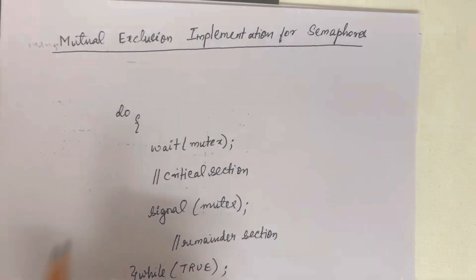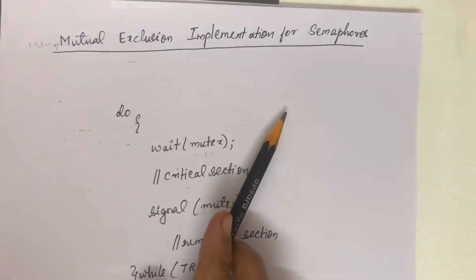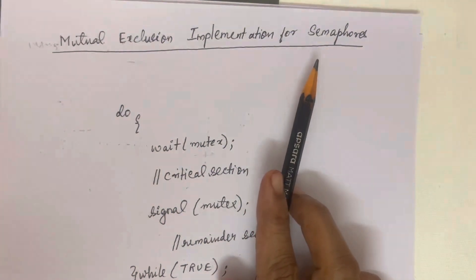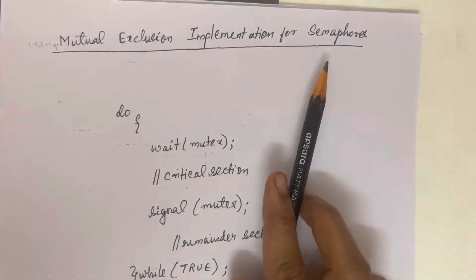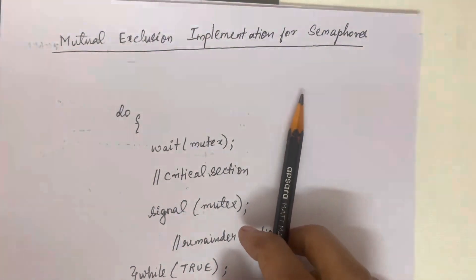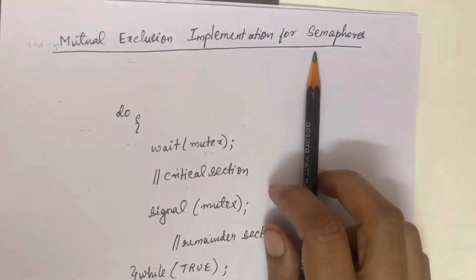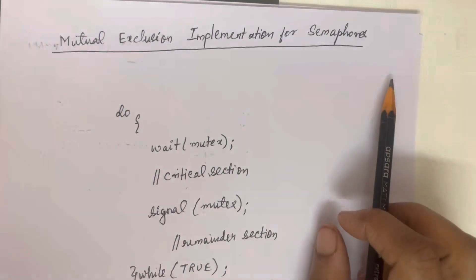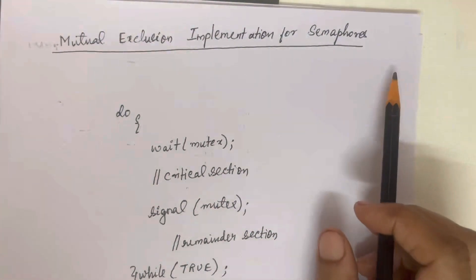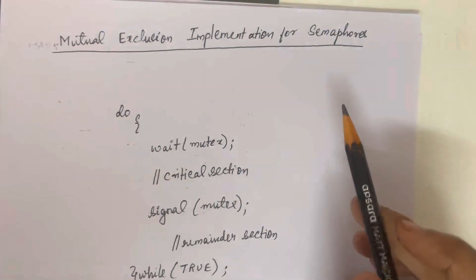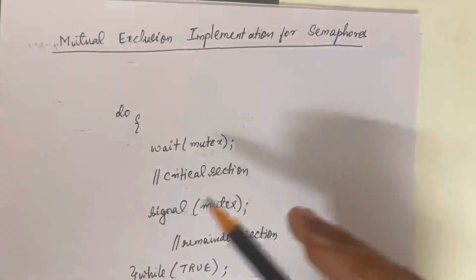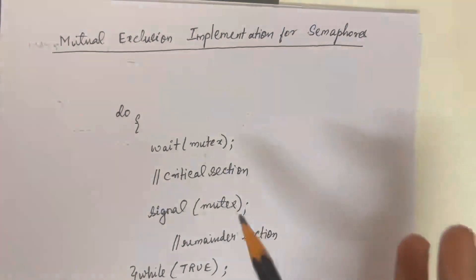In this video we will see how mutual exclusion is implemented with semaphore. In the last video I explained that a semaphore is a software solution for a critical section problem. We learned about two types: binary semaphore and counting semaphore. The critical section is a part of code where your shared variable is stored. When any one process is inside the critical section, no other process should be given access to enter — this is the constraint we have to maintain.